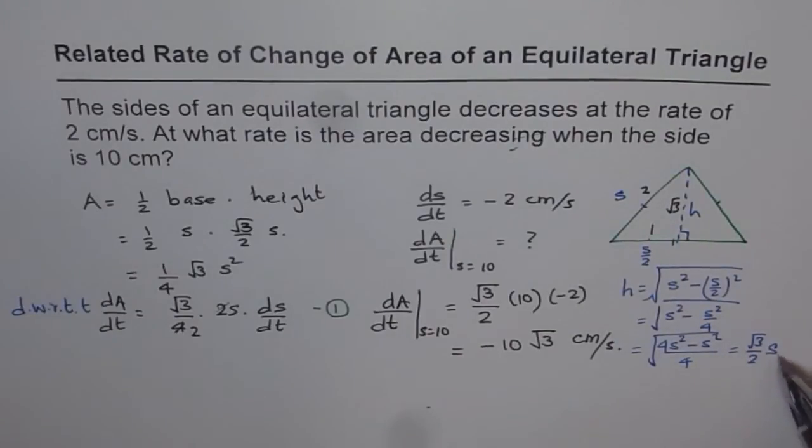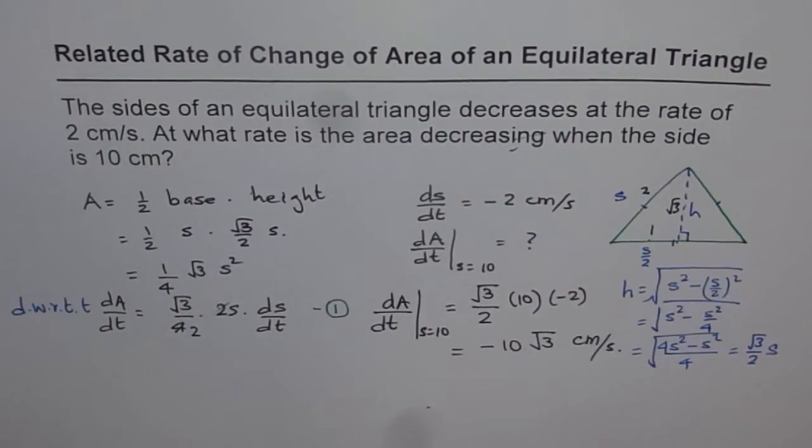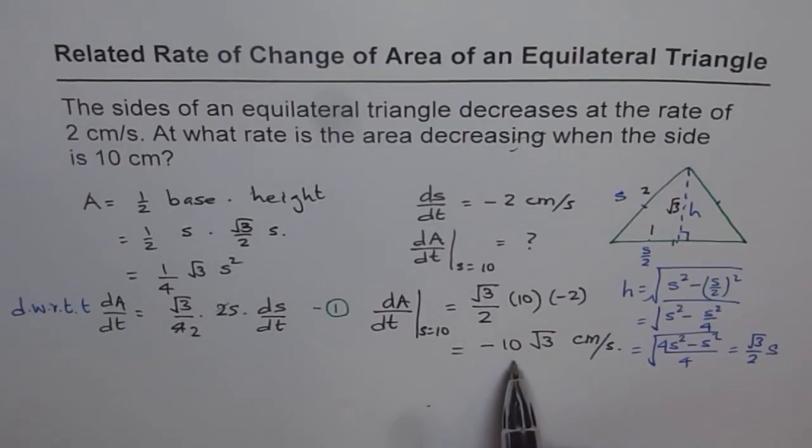So we could have got straight away what height should be in terms of S. Well, it is (√3/2)S. So you plug it in, get your relation, find the derivative, and substitute the values to get the answer. So minus here indicates that the area is decreasing. That's all it is to be done. Thank you.